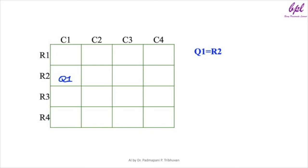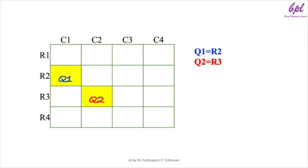We then place q2 again. We try q2 = r1 but this violates the diagonal constraint with q1. We try q2 = r2 but this violates the row constraint with q1. We try q2 = r3 but this violates the diagonal constraint with q1. Finally, we place q2 in row 4, which does not violate any constraint. Now we place queen 3.